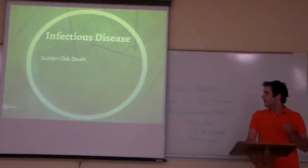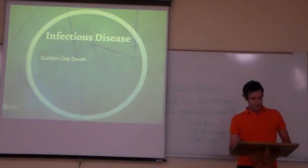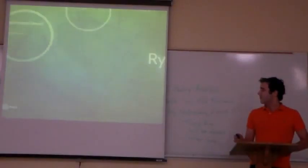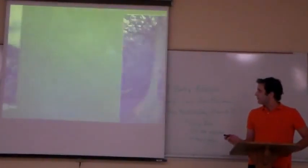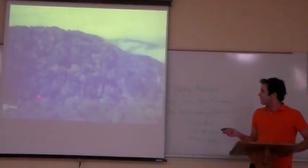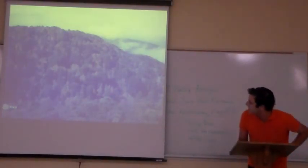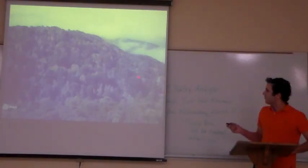Another example — this is a disease instead of an insect — is sudden oak death. It's caused by an oomycete plant pathogen and is mainly found in California and Oregon. It causes what are called bleeding cankers. There's a picture showing a forest with dead trees in between live ones — that's an entire forest that's dying.